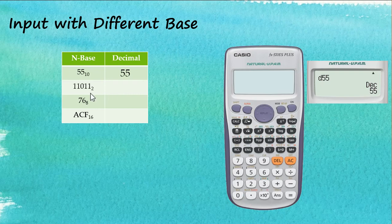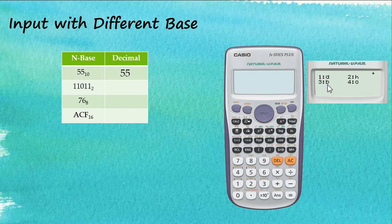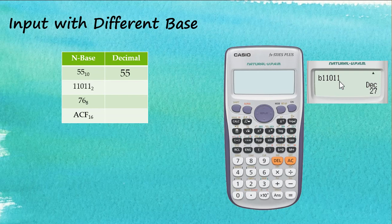The second number is 11011 in binary. We use Shift, Base, Down, and tell the calculator this is binary — binary is option 3. Then enter the number 11011. This is in base 2 (binary). When we tap equal, the calculator gives the answer in decimal: 11011 in binary equals 27 in decimal.